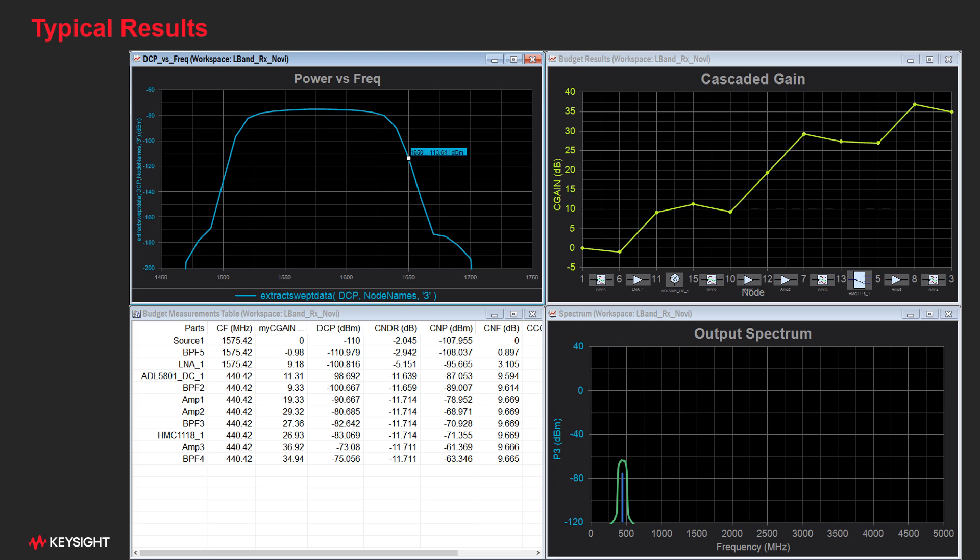And here is a typical output from that simulation, beginning with the upper left. Since we swept the frequency, we can get a frequency response curve, power versus frequency. Next to it, we have a graph of the cascaded gain along a path of parts on the schematic, which you can see on the horizontal axis. Here is the output spectrum, and here's a table of some other measurements.